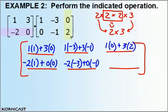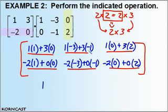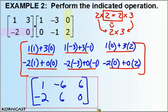Last but not least, row 2, column 3. First times first: negative 2 times 0. Second times second: 0 times 2. Add them together. Now just order of operations: 1 plus 0 is 1. Negative 3 plus negative 3 is negative 6. 0 plus 6 is 6. Negative 2 plus 0 is negative 2. 6 plus 0 is 6. And 0 plus 0 is 0. There is my final 2 by 3 matrix — the answer for this product.